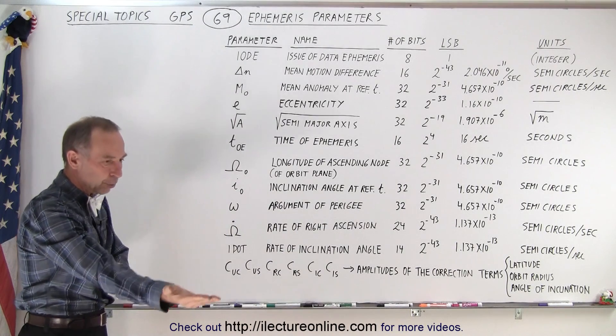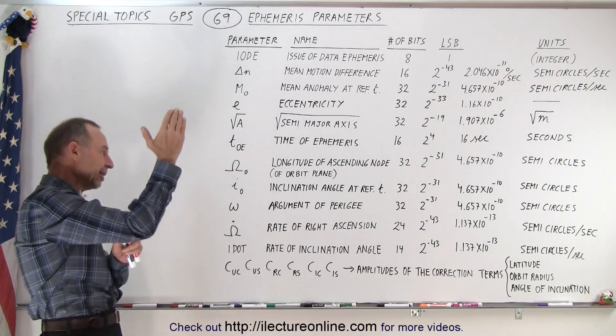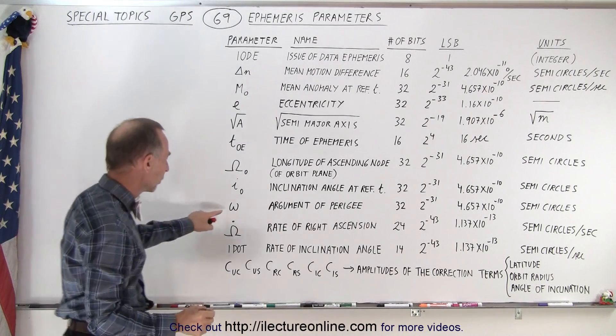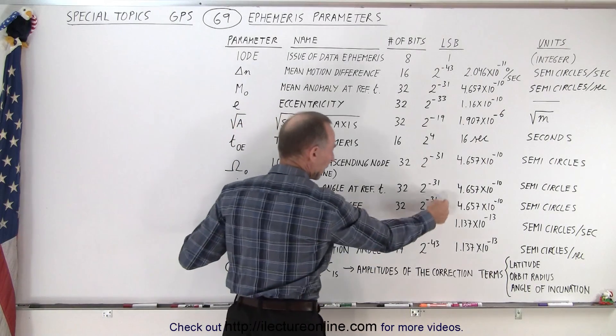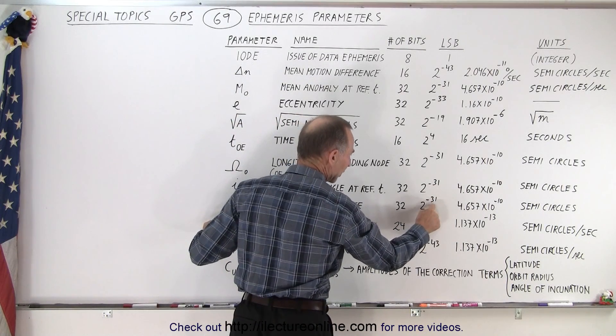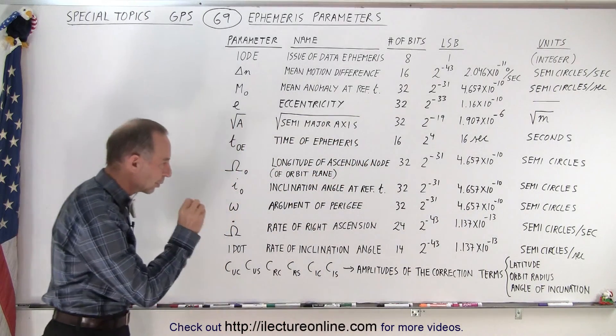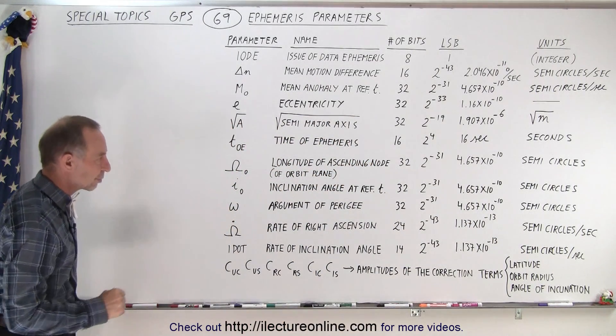We want to know what the angle is between a reference point and the perigee. That angle can vary slightly. We want to be able to keep track of that. We have adjustments of 2 times 10 to minus 31. We want to know that angle extremely precisely.